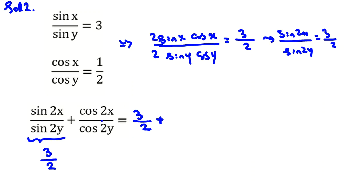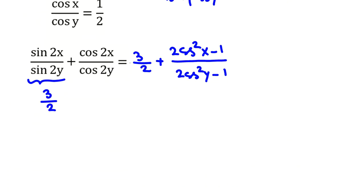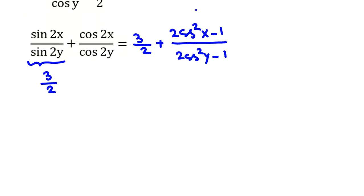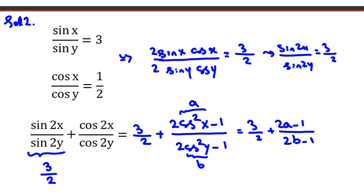For the second part, we write cosine 2x as 2 cosine squared x minus 1 and cosine 2y as 2 cosine squared y minus 1. Let A equal cosine squared x and B equal cosine squared y. So the expression becomes 3 over 2 plus (2A minus 1) over (2B minus 1). We need to find A and B.